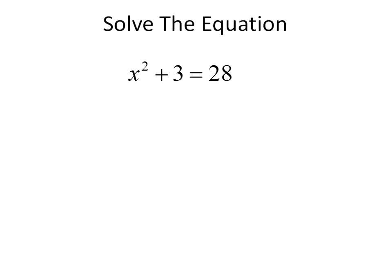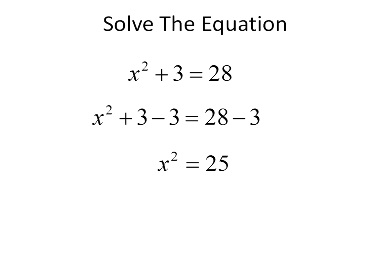Now let's take that one step further. Here is the next step: if we have x squared plus 3 is equal to 28, we're going to use inverse operations to get x by itself. We start farthest away from x, so we subtract 3 from both sides. That gets rid of the plus 3 and leaves us with just x squared. On the right side, 28 minus 3 is 25. Now we're looking at x squared is equal to 25. We'll take the square root of both sides — square root of x squared is x, square root of 25 is 5. That would be plus or minus 5, but we're just going to write it as a positive.